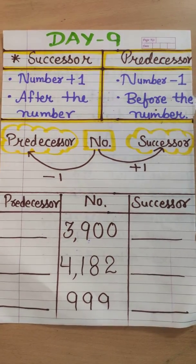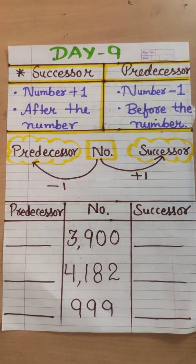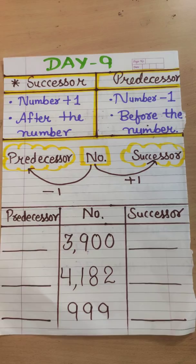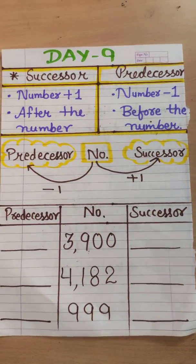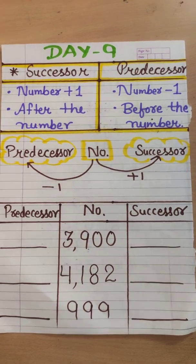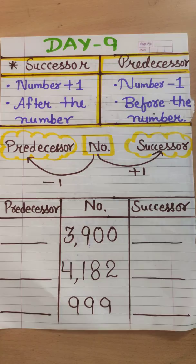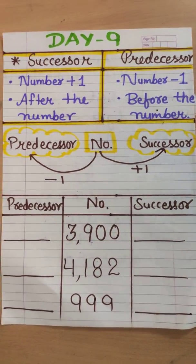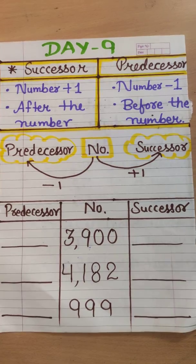Now in Day 9 we have one more concept: successor and predecessor. Imagine we are standing, and if we go one step forward, that is called the successor. And if we go one step backward, that is called the predecessor. So successor comes after the number, and predecessor comes before the number.